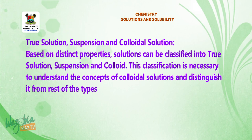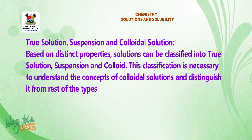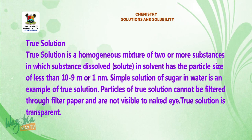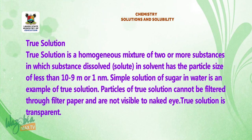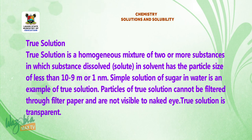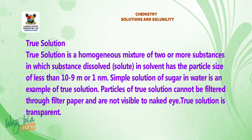Based on distinct properties, solutions can be classified into true solution, suspensions, and colloid. This classification is necessary to understand the concept of colloidal solution and distinguish it from other types. True solution: a homogeneous mixture of two or more substances in which the dissolved substance (solute) in solvent has a particle size of less than 10⁻⁹ meter or 1 nanometer. Simple sugar in water is an example. Particles of a true solution cannot be filtered through filter paper and are not visible to the naked eye. True solution is transparent.